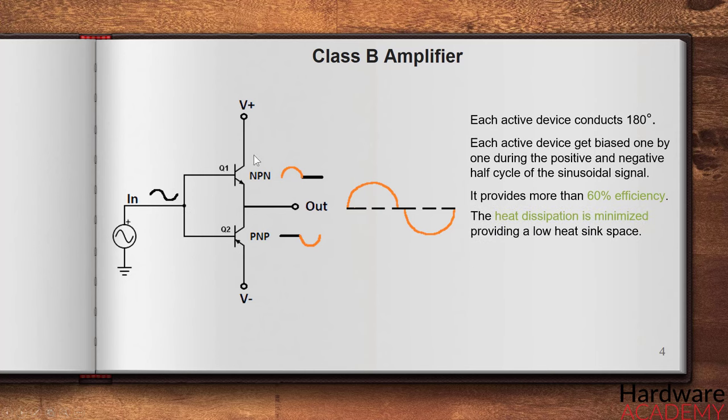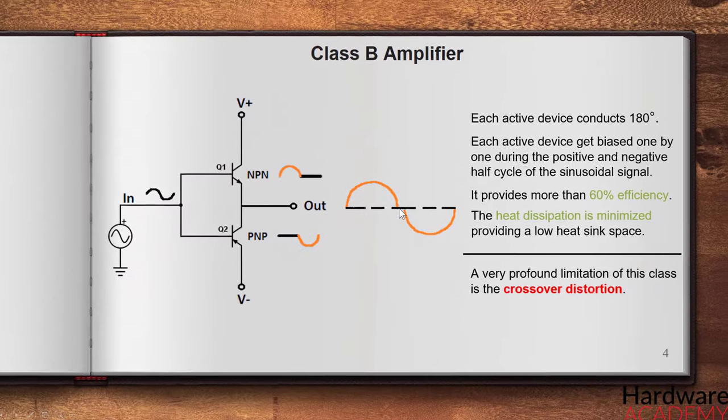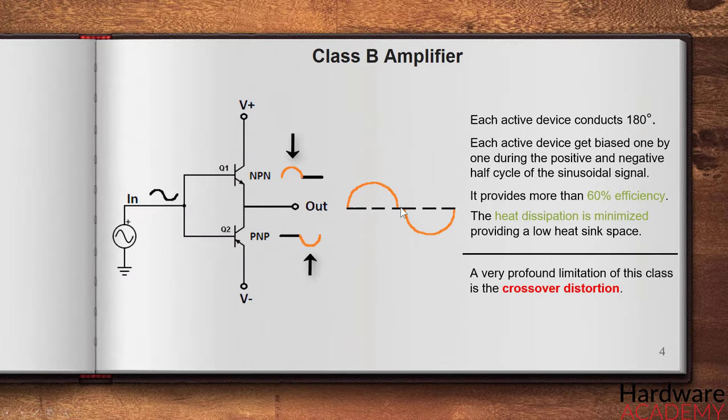But this class also has limitations. A very profound limitation of this class is the crossover distortion. As two devices provide each half of the sinusoidal waves which are combined and joined across the output, there is a mismatch or in other words crossover in the region where two halves are combined.